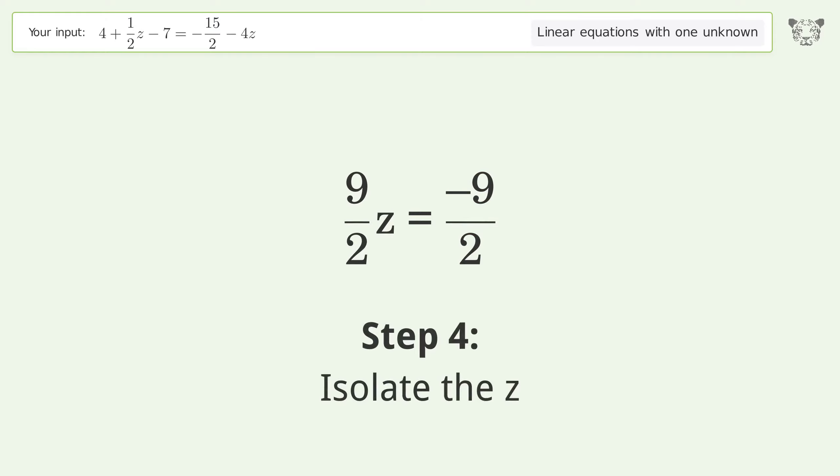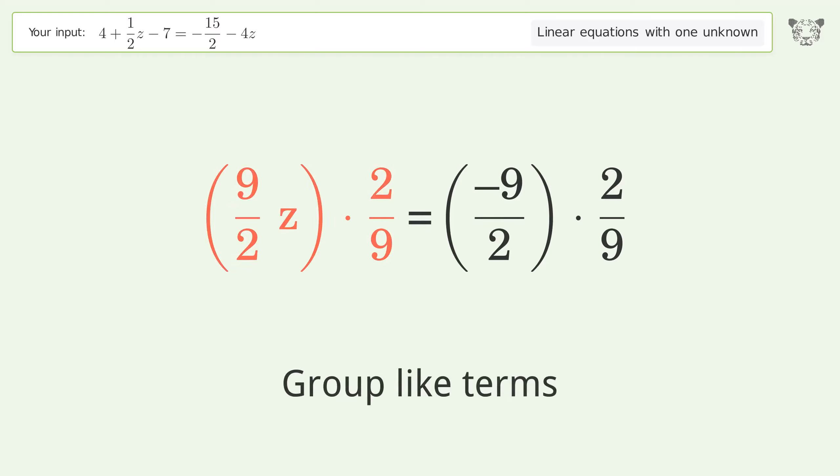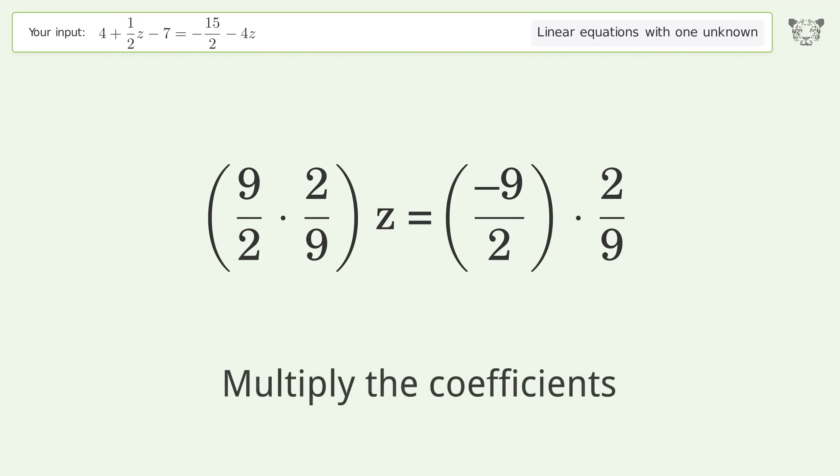Isolate the z. Multiply both sides by inverse fraction 2 over 9. Group like terms. Multiply the coefficients.